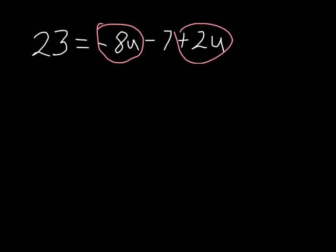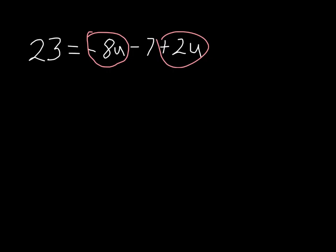I'm including the signs in front of each term. We're going to combine those together: minus 8u plus 2u. A negative 8 plus a positive 2 is a negative 6u, so that's what I'm going to get there, and bring down the rest of the problem right here.